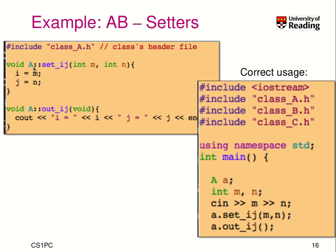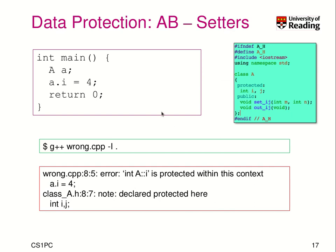In this case, it's very simple. The set_ij method will just set i to m and j to m — nothing special. We also have a method out_ij which prints the values for debugging or illustration purposes. So what we may want to do is create an object, an instance of it — here lowercase a — then we read m and n, set i and j to m and n, and lastly print them. Very simple usage and it works correctly. What won't work is if you try to access a private or protected variable directly.